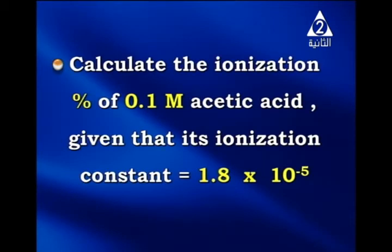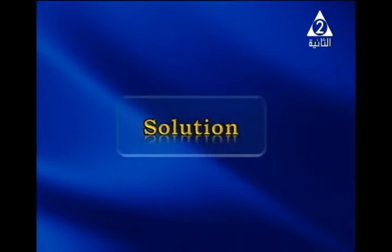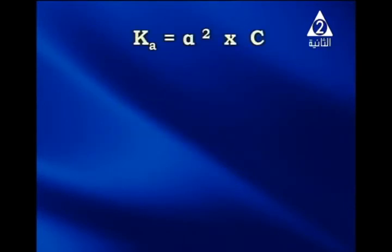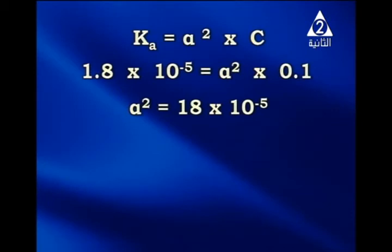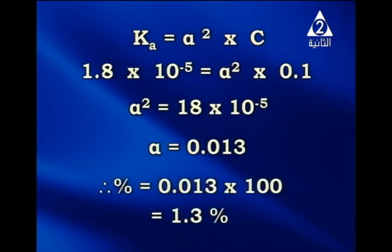Problem 4: Calculate the ionization percentage of 0.1 molar acetic acid, given Ka = 1.8 × 10⁻⁵. Solution: Ka = alpha² × c, so 1.8 × 10⁻⁵ = alpha² × 0.1, giving alpha² = 1.8 × 10⁻⁴, so alpha = 0.0134. The percentage of ionization = alpha × 100 = 1.3%.